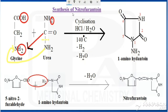Today we are going to see the synthesis of nitrofurantoin. Nitrofurantoin is a nitrofurane used as a urinary tract anti-infective. The basic nucleus required for nitrofurantoin is the 5-nitro-2-furaldehyde nucleus. Now we will see the synthesis.